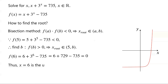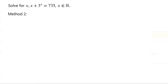Thus, x equals 6 is the unique solution. Method 2: We can also solve the equation using the Lambert W function. The first step is to transform the equation into the form g of x times e to the power of g of x equals a number v.